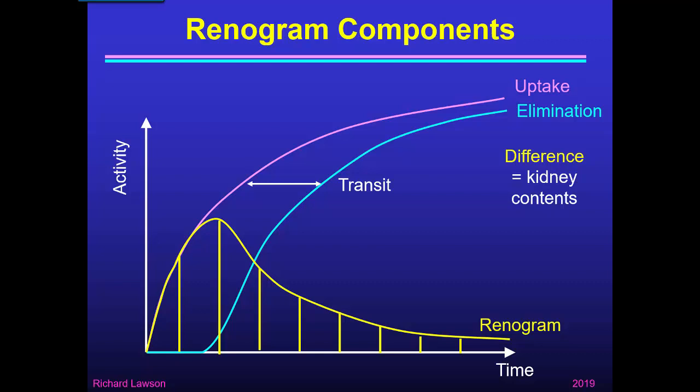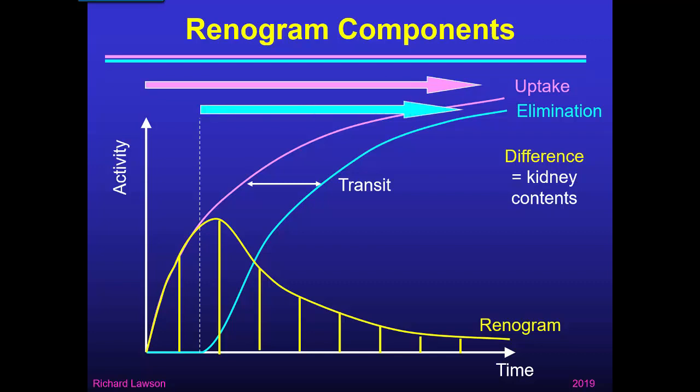The renogram curve is made up of uptake which starts from the beginning and continues, and elimination which starts after a few minutes, because elimination doesn't start until activity begins to come out into the bladder — and that has a minimum transit of the time it takes to get through the tubules of maybe three minutes.